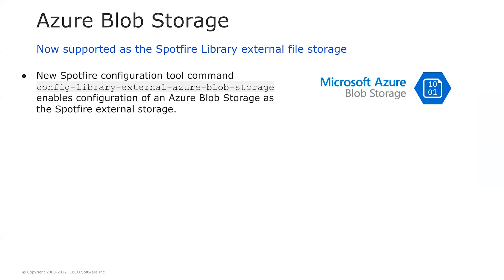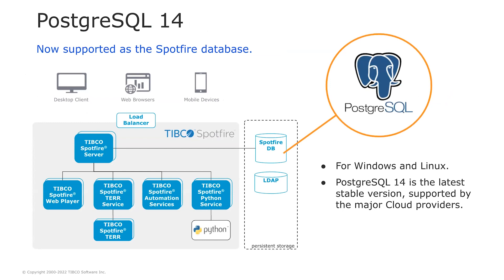One of our pillars with platform administration and deployment is freedom — freedom of being vendor neutral, freedom to be cloud agnostic. We already support AWS S3 storage as the Spotfire library external file storage, and now with Spotfire 11.8 we are adding support for Azure Blob Storage, so you can use the same capability with other major cloud service providers. We are also adding support for PostgreSQL 14 as the Spotfire server database, both for Windows and Linux. PostgreSQL 14 is the latest stable version and it's supported by the major cloud providers.